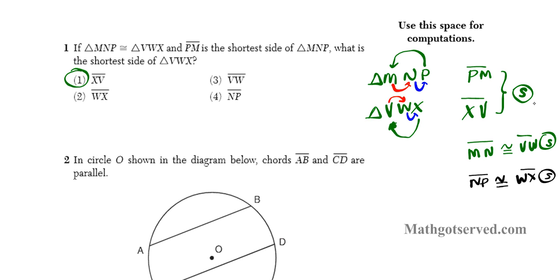You have SSS, which is a condition for two triangles to be congruent. So you can clearly see that our answer is option 1.